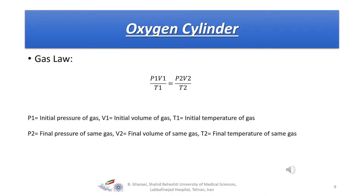Based on gas laws, if you have a container with a pressure, a volume, and a temperature, and you move the gas to another container with a different pressure, the volume and temperature in different spaces follow the equation: P1 is the initial pressure of the gas, V1 is the initial volume, and T1 is the initial temperature of the gas. The second container gives the second part of this equation.